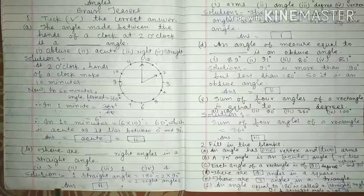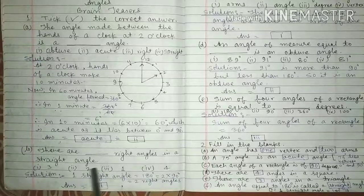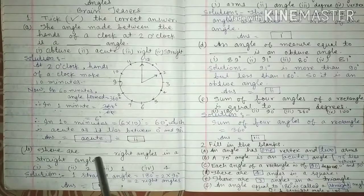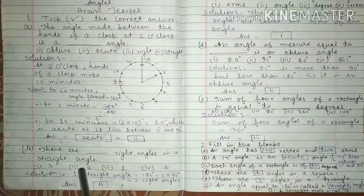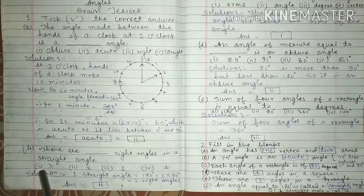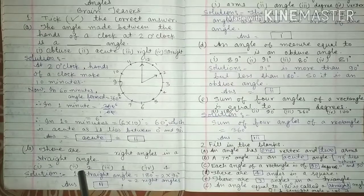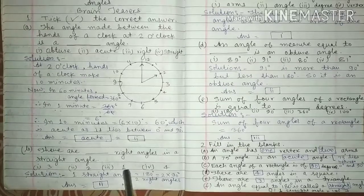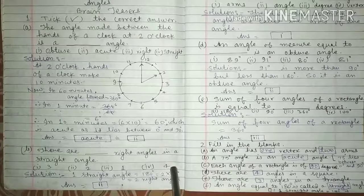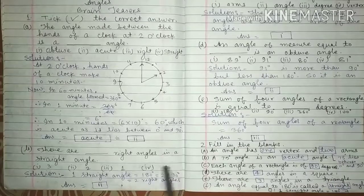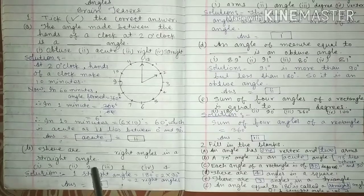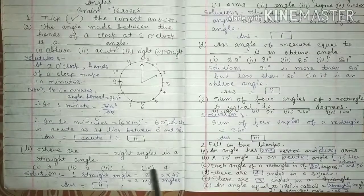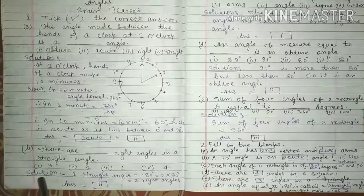Question number 2. There are how many right angles in a straight angle? 1. 3, 2. 2, 3. 1, 4. 4. In first, given it is 3. Second, 2, 3rd, 1, 4th, 4. For the solution of this question, we write,